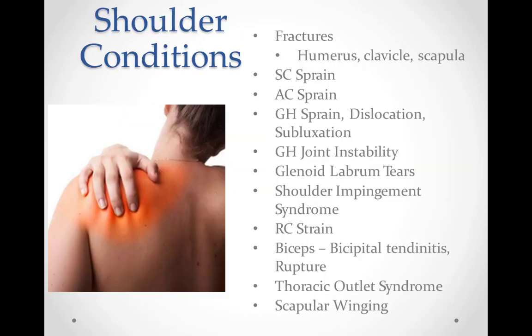Shoulder conditions to be discussed include fractures of the humerus, clavicle, and scapula; sternoclavicular joint sprains; acromioclavicular joint sprains; glenohumeral joint sprains, dislocations, and subluxations; glenohumeral joint instability; glenoid labrum tears; shoulder impingement syndrome; rotator cuff strain; biceps, which includes bicipital tendonitis and rupture; thoracic outlet syndrome; and scapular winging.